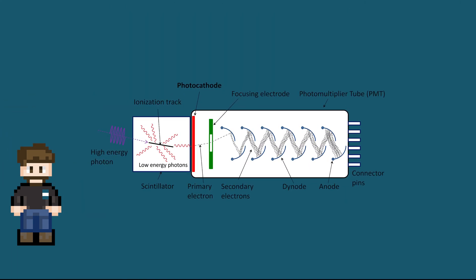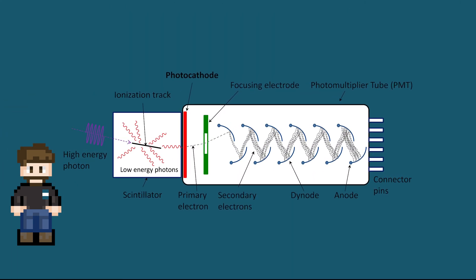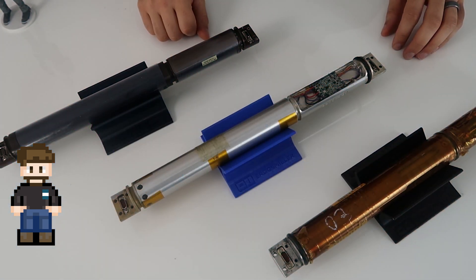So the way it operates is when a gamma particle hits it, photons are generated by the sodium iodide crystal. The photomultiplier tube picks up those photons and amplifies them such that they can be detected by the electronics and sent out to the rest of the MWD. The MWD system then transmits the total number of gamma counts per second back to surface.